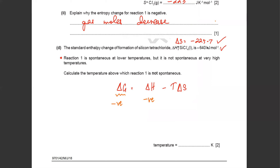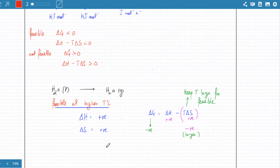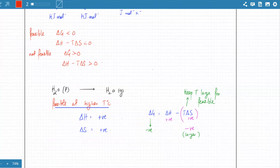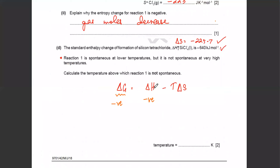I told you that reactions are not inherently spontaneous or non-spontaneous — they depend on temperature. For example, turning liquid water to steam is spontaneous at very high temperatures but not at very low temperatures. In this question, both delta H and delta S are negative, and two negatives combine to form a positive.